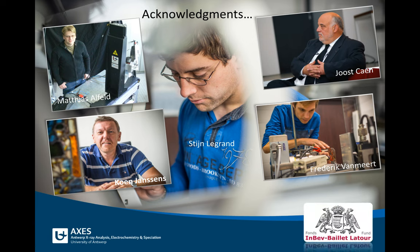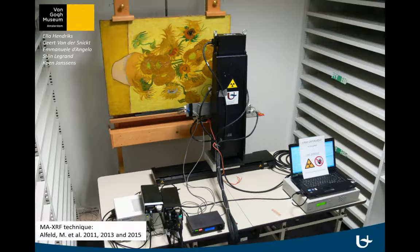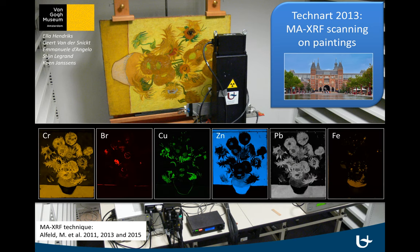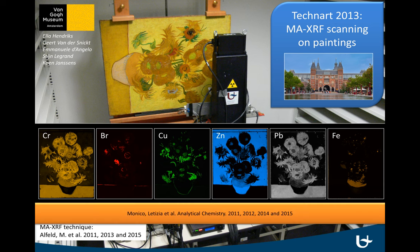The research discussed here was supported by the MBEV Bayer Latour Fund. The macro XRF scanning instrument was originally developed for characterization of easel paintings. The elemental distribution maps produced by the scanner allow us to identify and visualize the painting materials, an aspect that can also be employed for finding pigments that have been discolored. For the case of the sunflowers, we were particularly interested in degraded germanium lake and chrome yellow, a topic extensively investigated by my colleague Letizia Mornico.